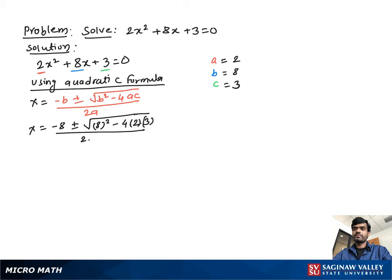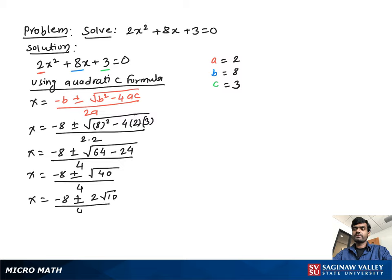Then, we get x equal to negative 8 plus minus square root, 8² is 64 minus 4 times 2 times 3 is 24, over 2 times 2 is 4. Now, x equal to negative 8 plus minus square root 64 minus 24 is 40 over 4.